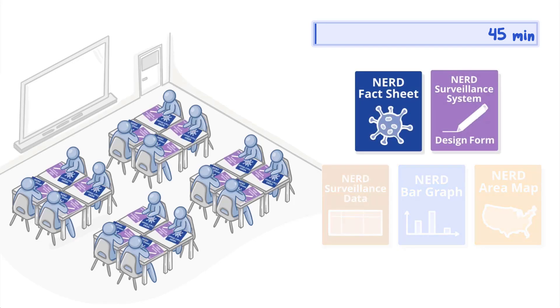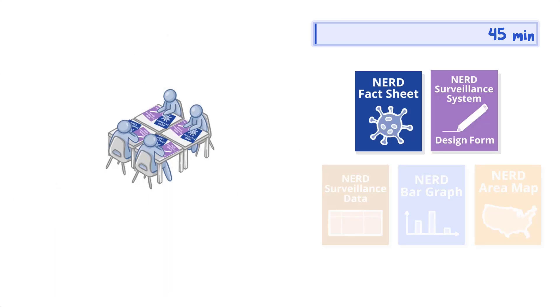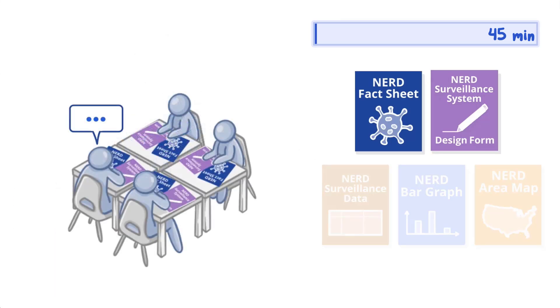Hand out the NERD fact sheet and NERD surveillance system design form for the part one activity and give students around four or five minutes to brainstorm a potential case definition, identify type of surveillance required, and list key surveillance information they believe is important to collect on NERD.